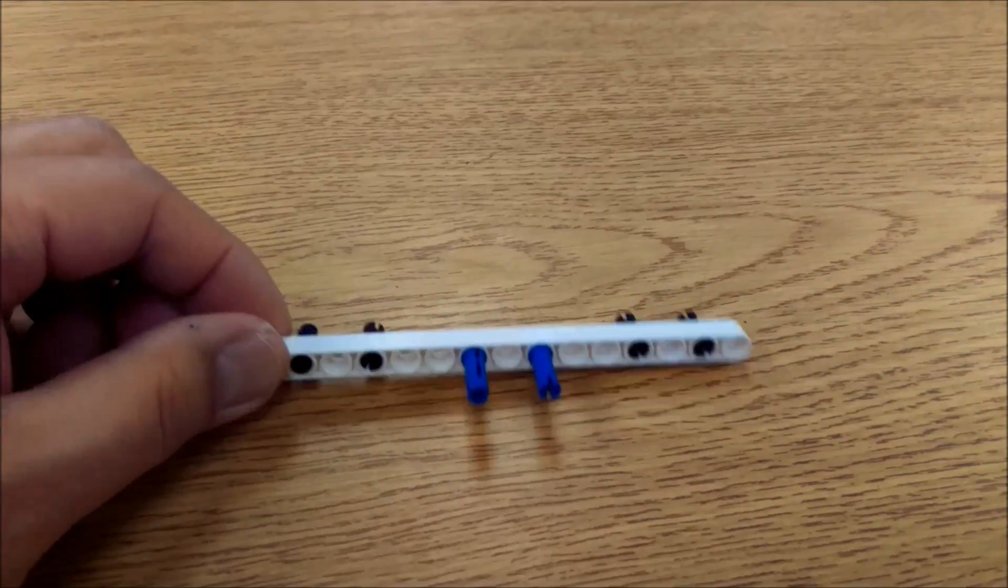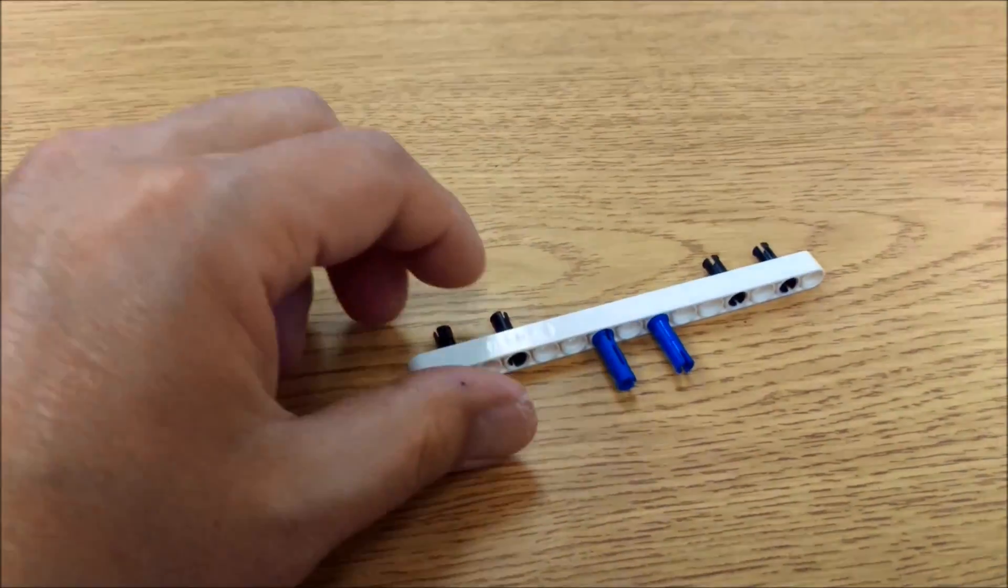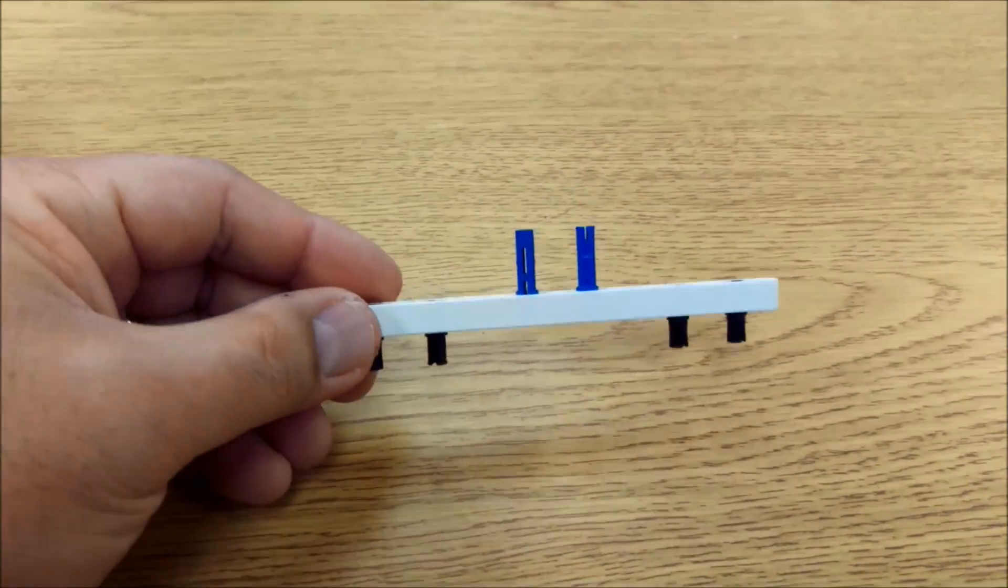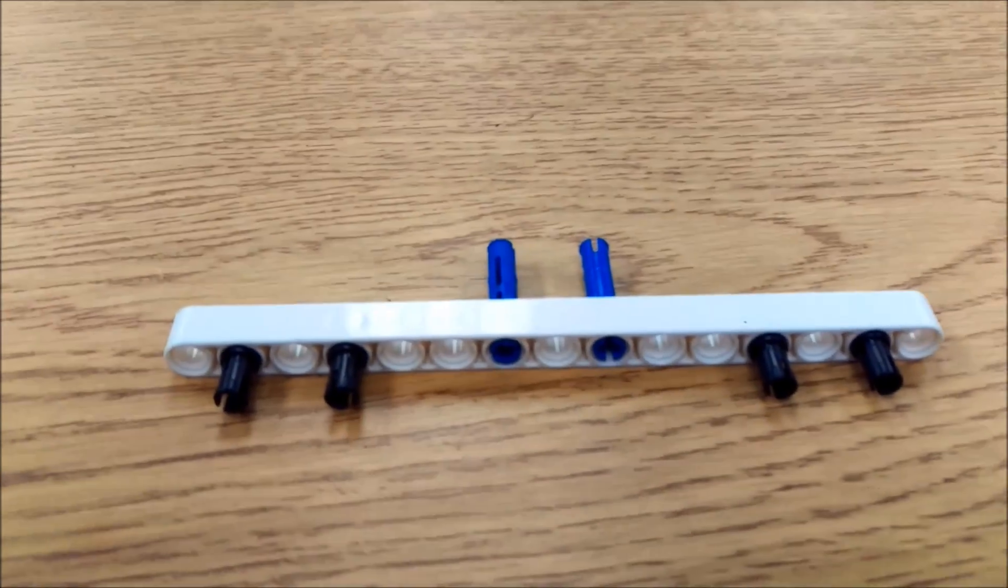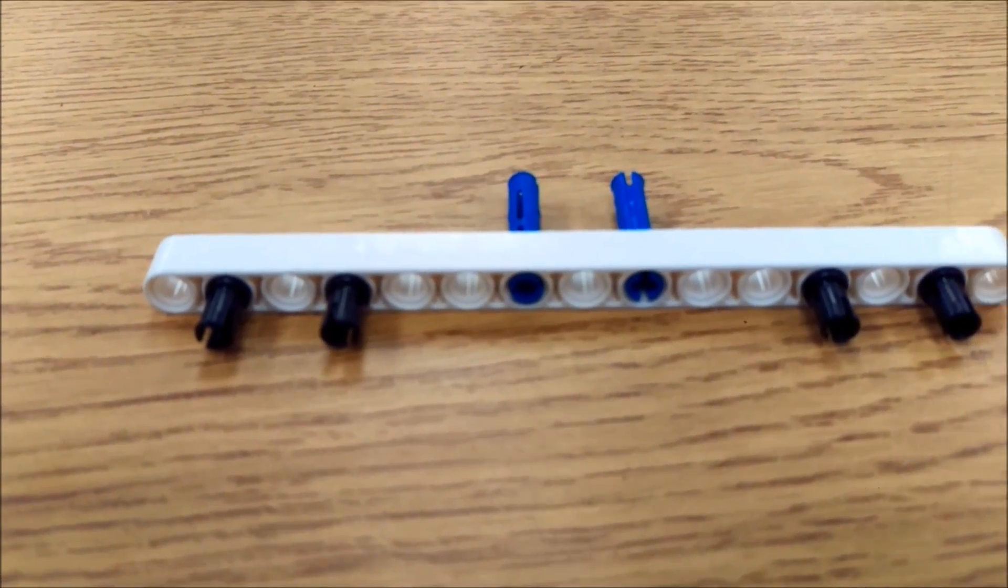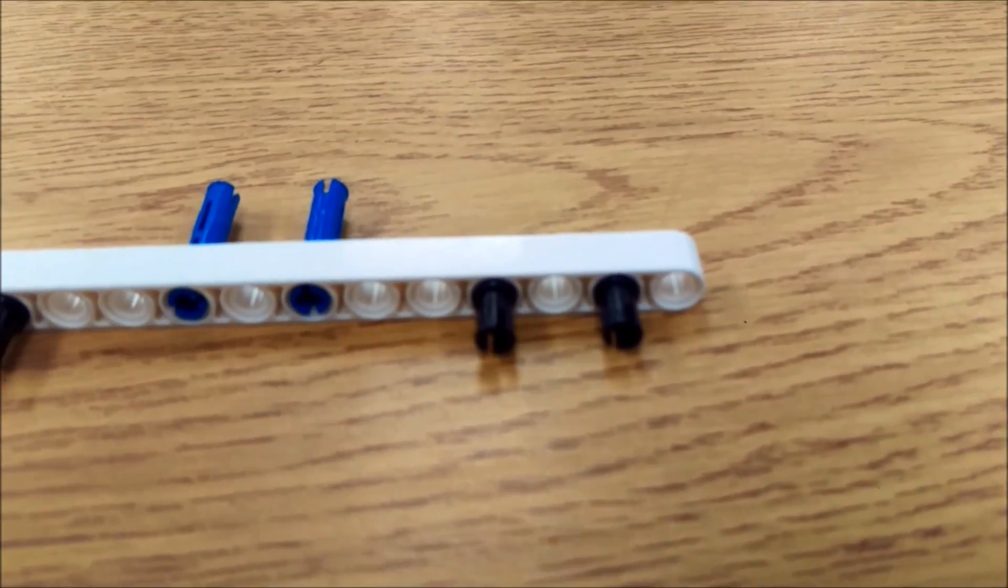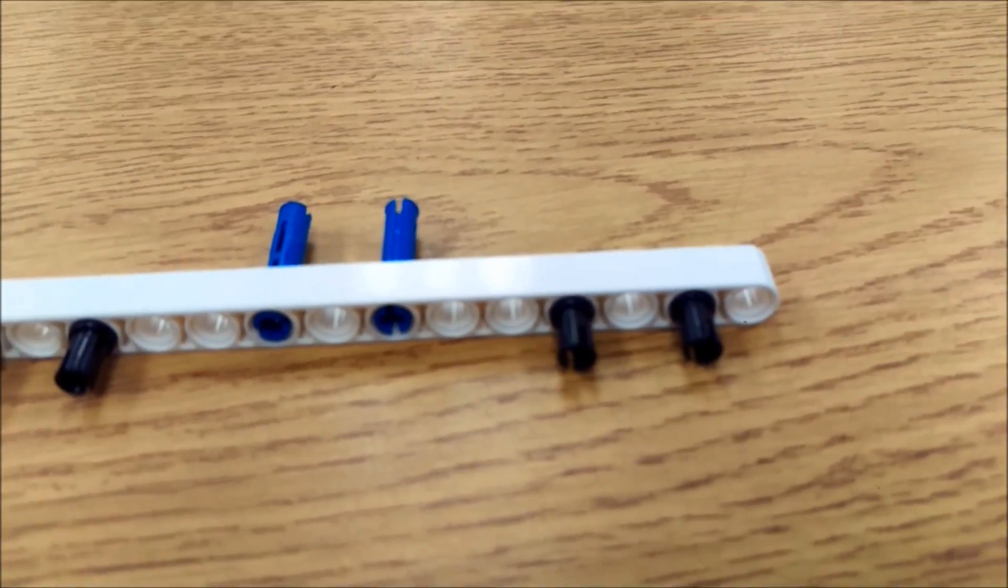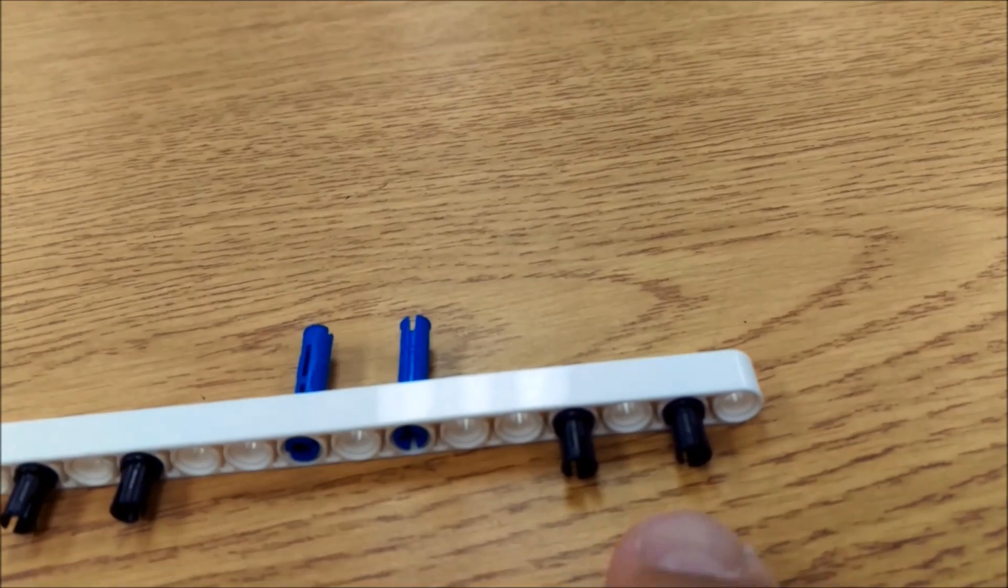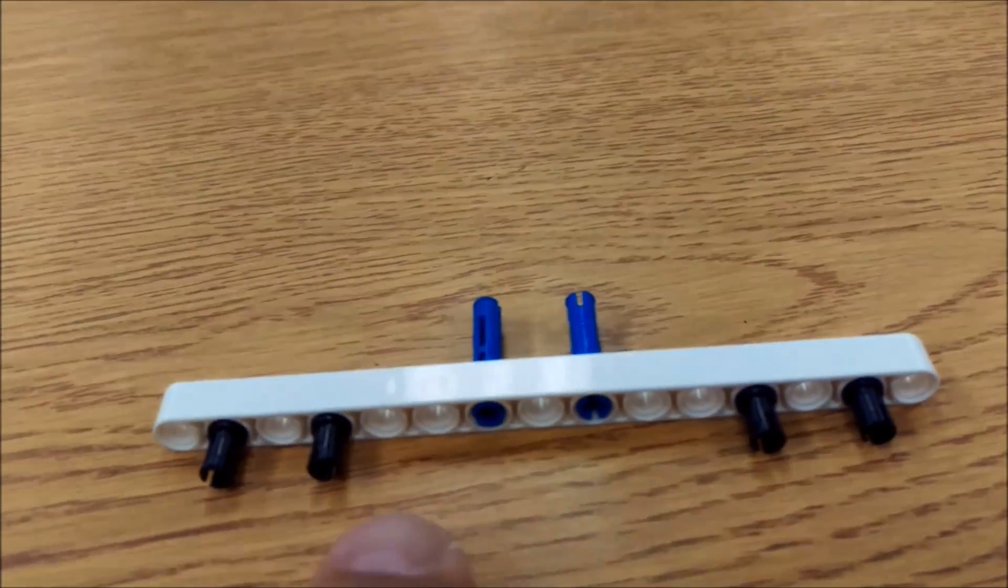Okay guys now for this 15 hole white beam. The black connectors will go in like so. Notice that the last hole is left empty. So they get staggered like that. One here. Skip a hole. Another one there. Like that.